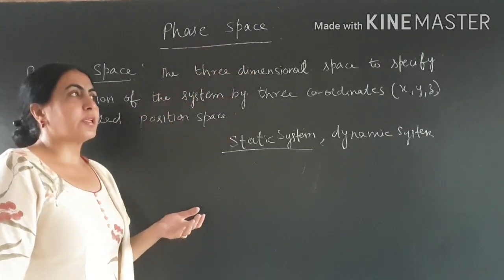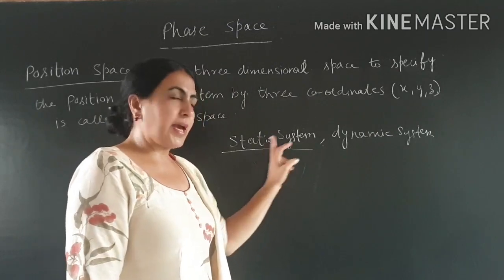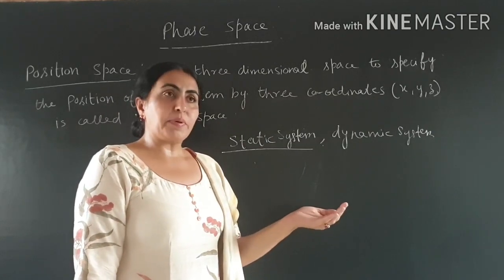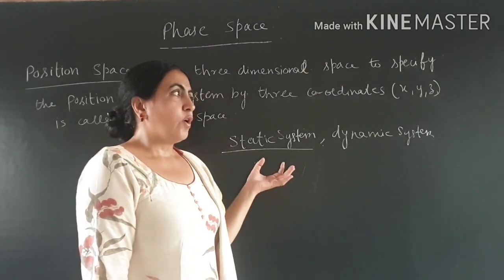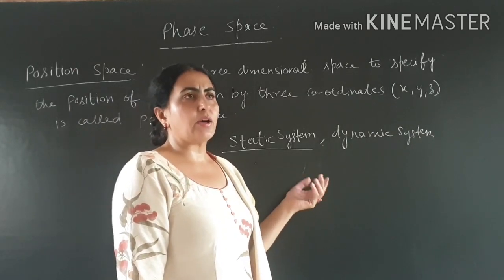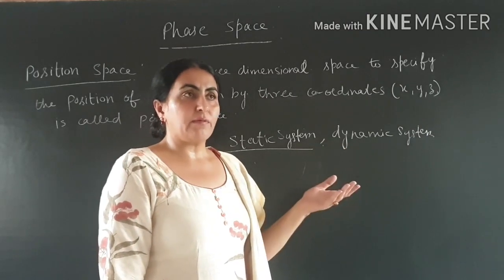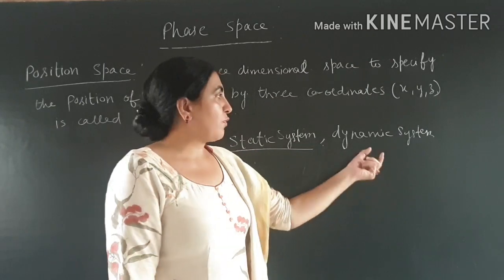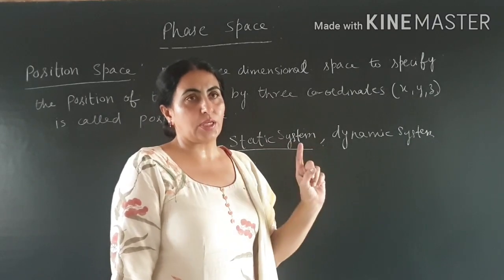Before going to phase space, we must know that we have two systems: one is a static system and another is a dynamic system. In a static system, the position of the particle is fixed, so in three dimensions we need three coordinates — X, Y, Z — to represent a particle. But in a dynamic system, the particles are moving with some velocity, and if they are moving with some velocity, they must have momentum.